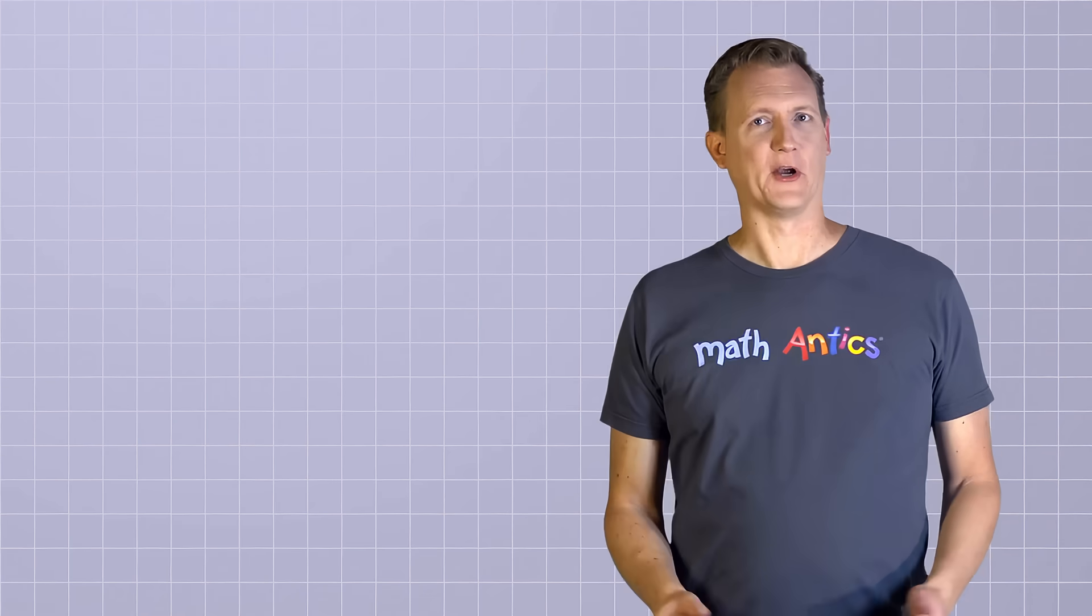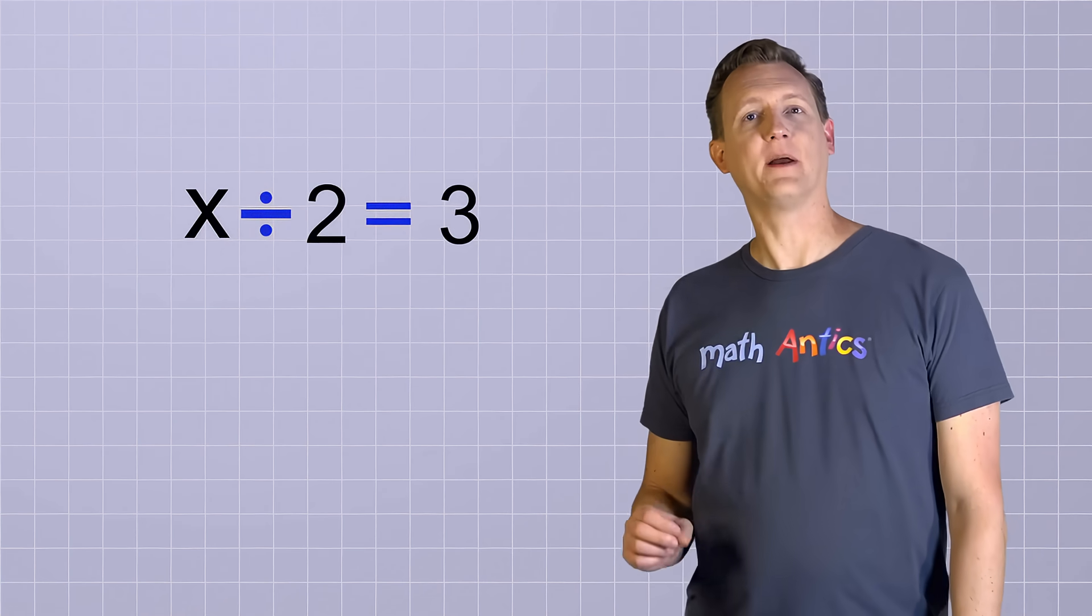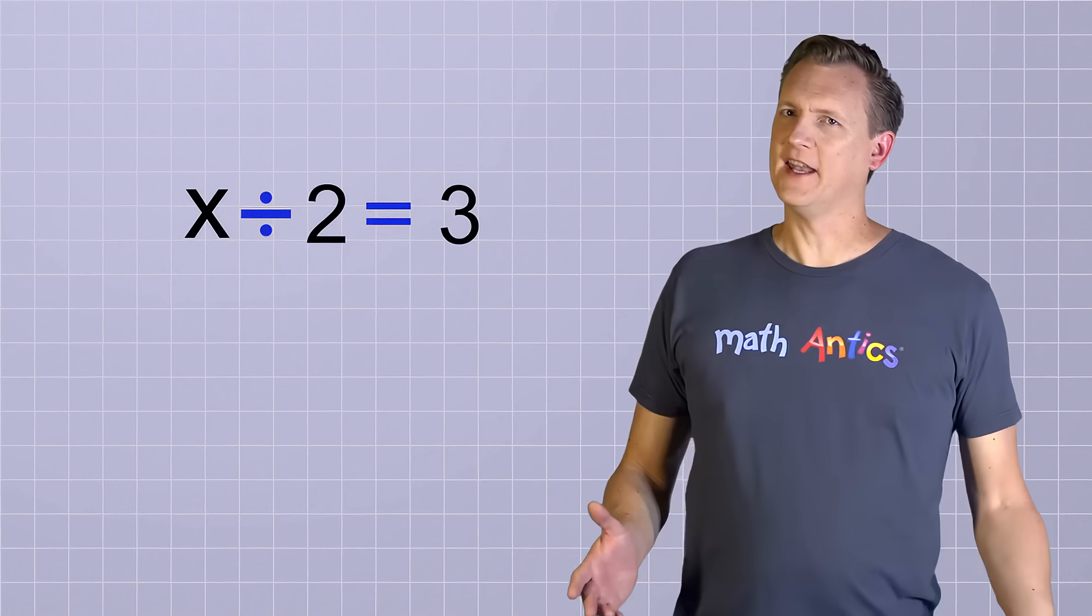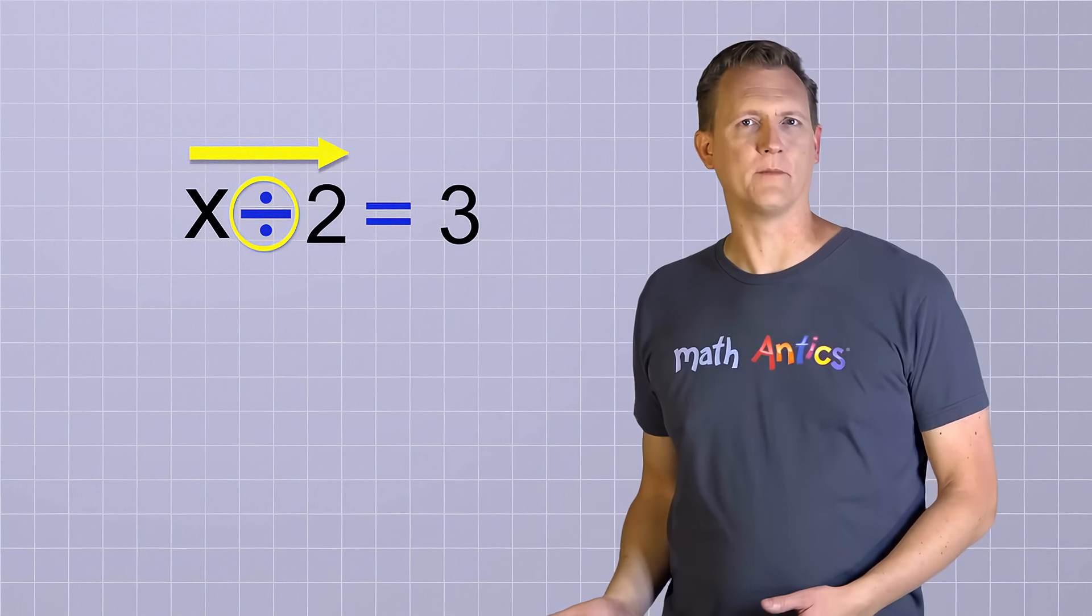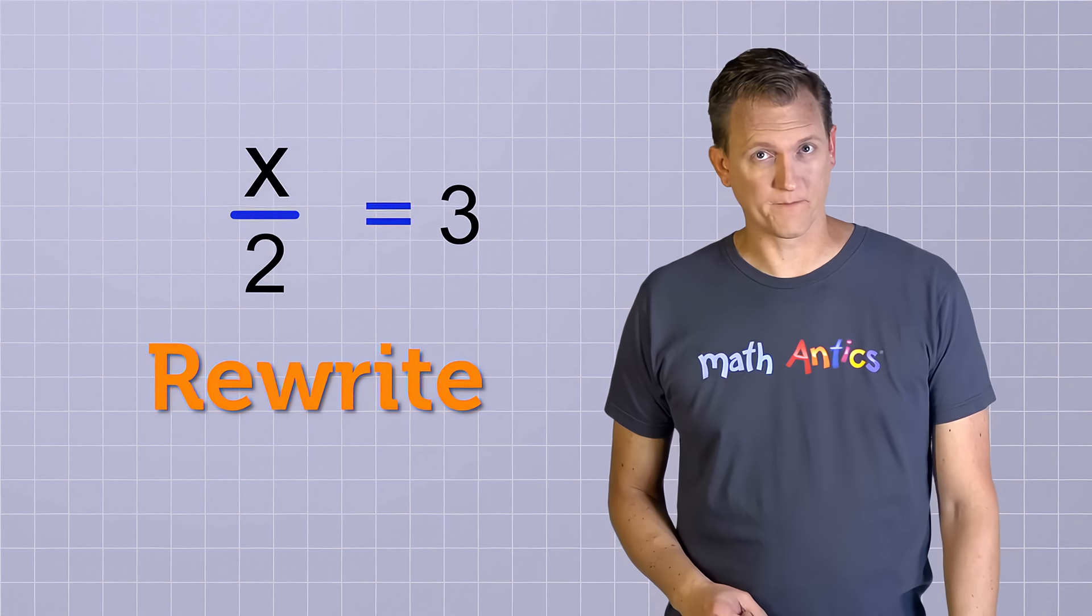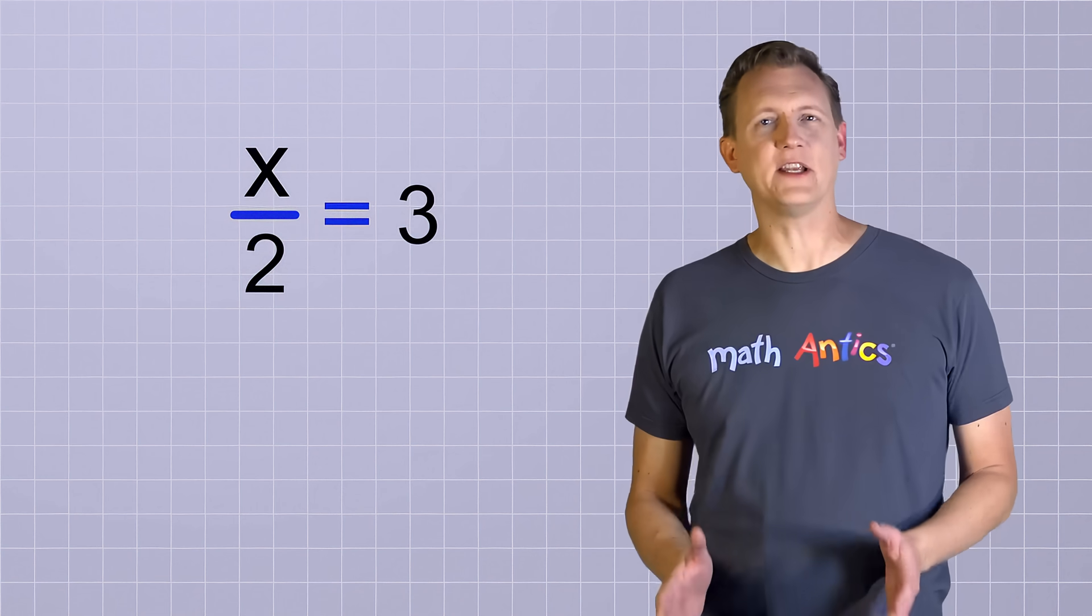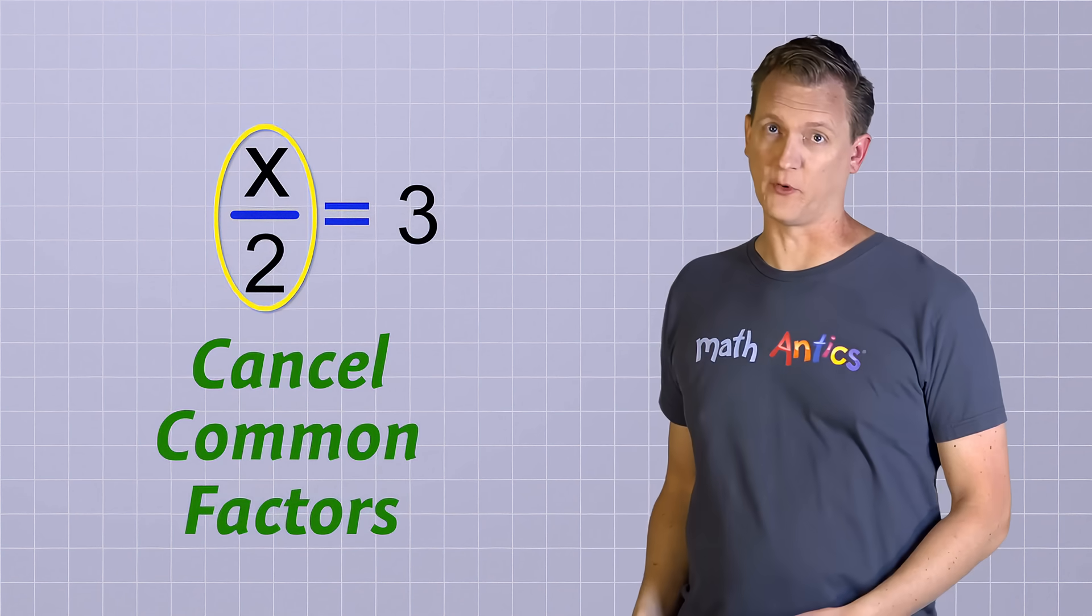That's pretty easy, isn't it? Are you ready to try a division problem now? Here we have x divided by 2 equals 3. Now, when you see division written like this, from left to right with the traditional division symbol, I want you to rewrite it using the fraction form for division. And that's because it's much easier to cancel common factors and simplify your equation when you use the fraction form.